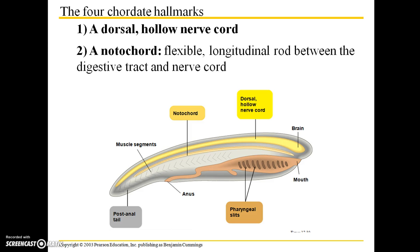There are four main hallmarks of phylum Chordata. The first is a dorsal — meaning situated towards the back of the animal — hollow nerve cord, illustrated in this picture by this yellow line. In this case, it's continuous with the brain.